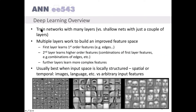In deep learning, we have deep neural networks. However, in shallow networks, there are just a couple of layers. Multiple layers work to build and improve the feature space. For example, the first layer learns first-order features such as edges. The second layer learns higher-order features — combinations of first-layer features, for example combinations of edges. And further layers learn more complex features.